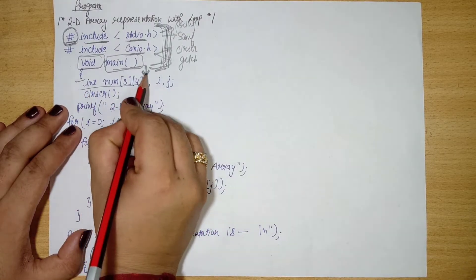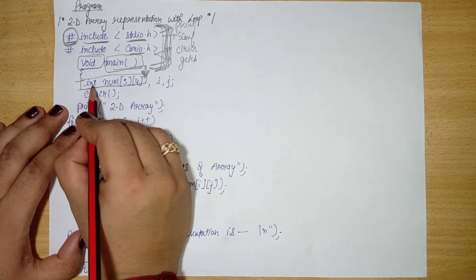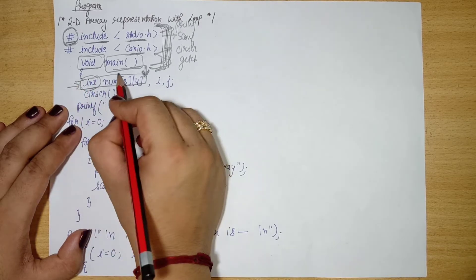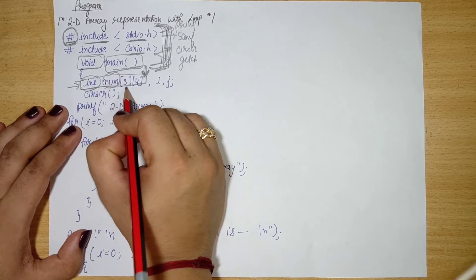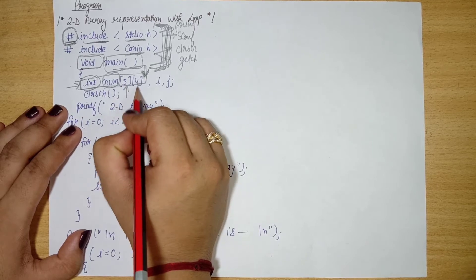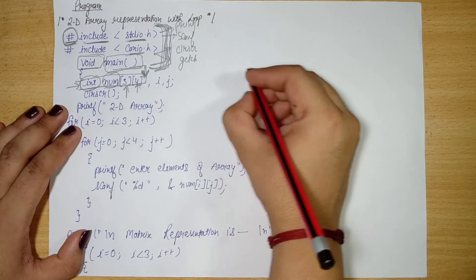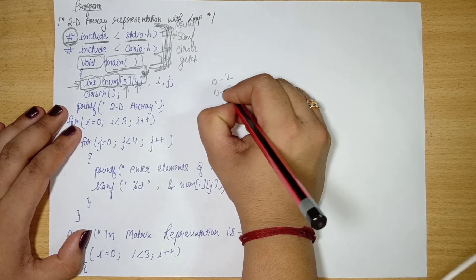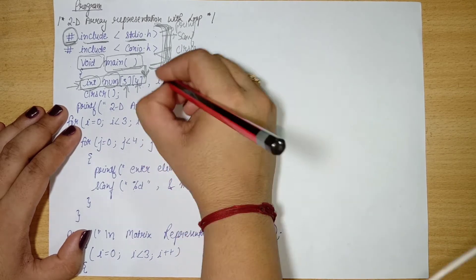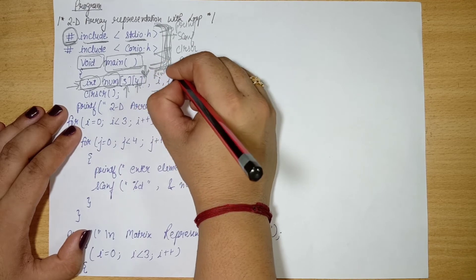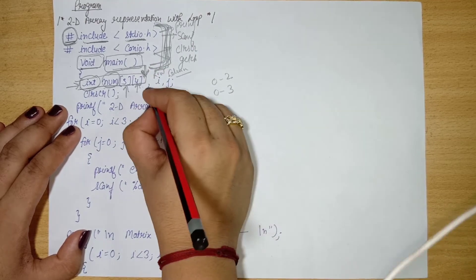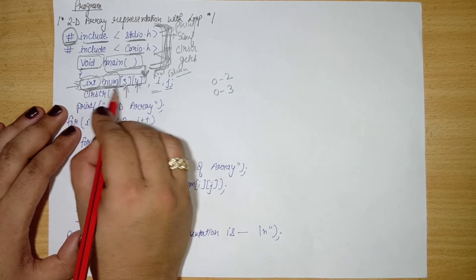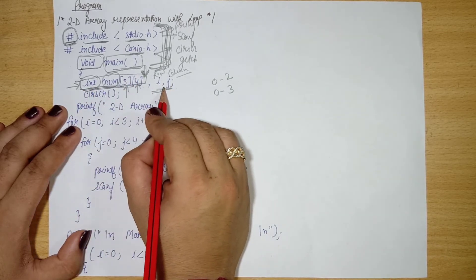We have declared a 2D array: integer type, named 'num', with row size 3 and column size 4. The range of rows is 0 to 2, and the range of columns is 0 to 3. We have also declared two integer counters: the first is 'row' (i) and the second is 'col' (j).